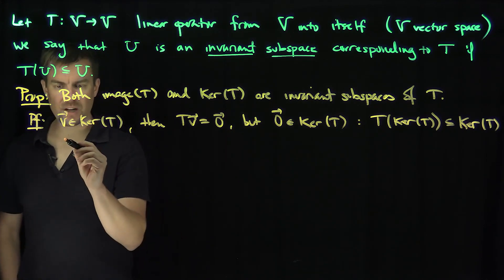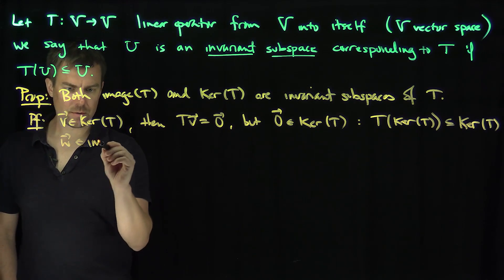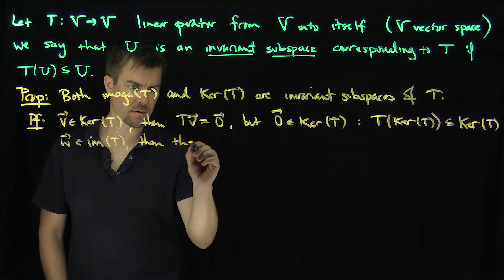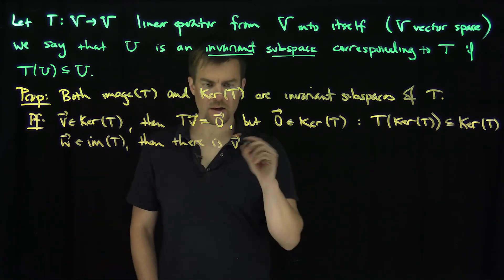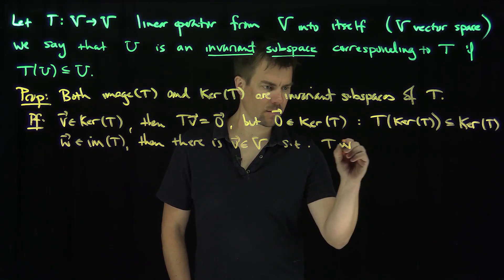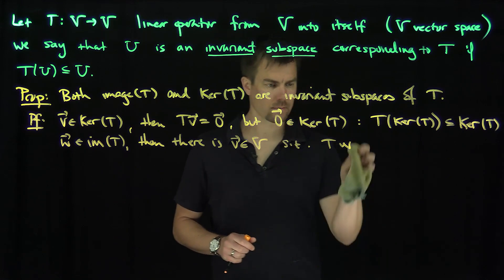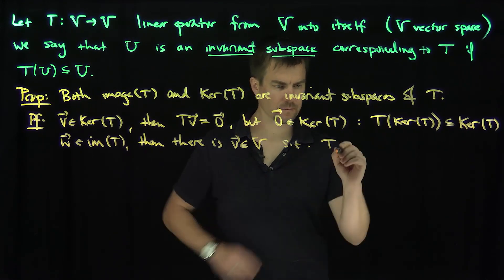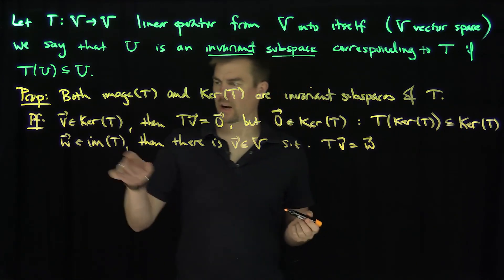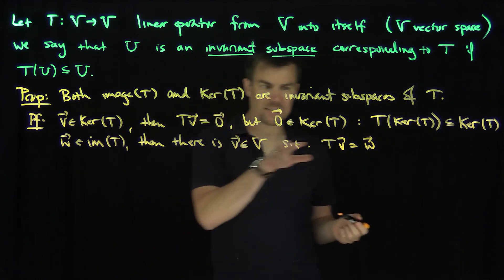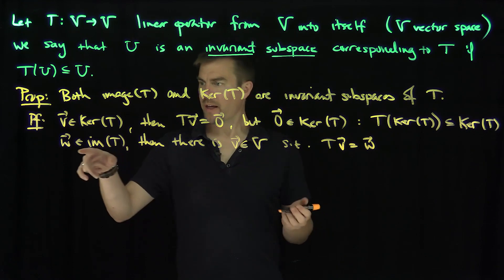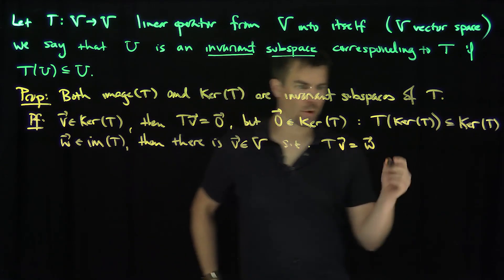And then likewise, if we let w be in the image of T, then there exists v in V such that T(v) is equal to w. But now what is this? So w is in the image, right? So there has to be a v over here that satisfies this relationship. Now the question becomes, is it true that this w, that T(w) is in the image? Well, what's T(w)?